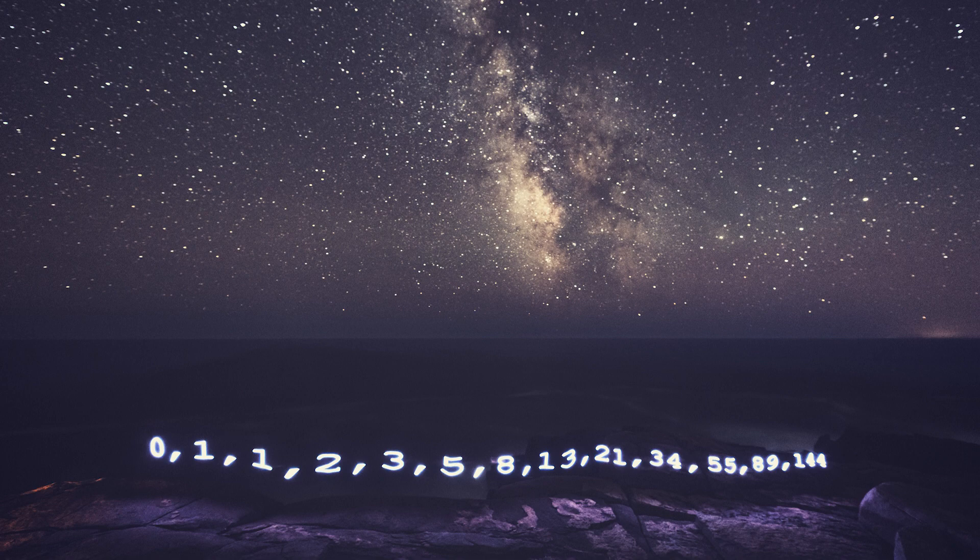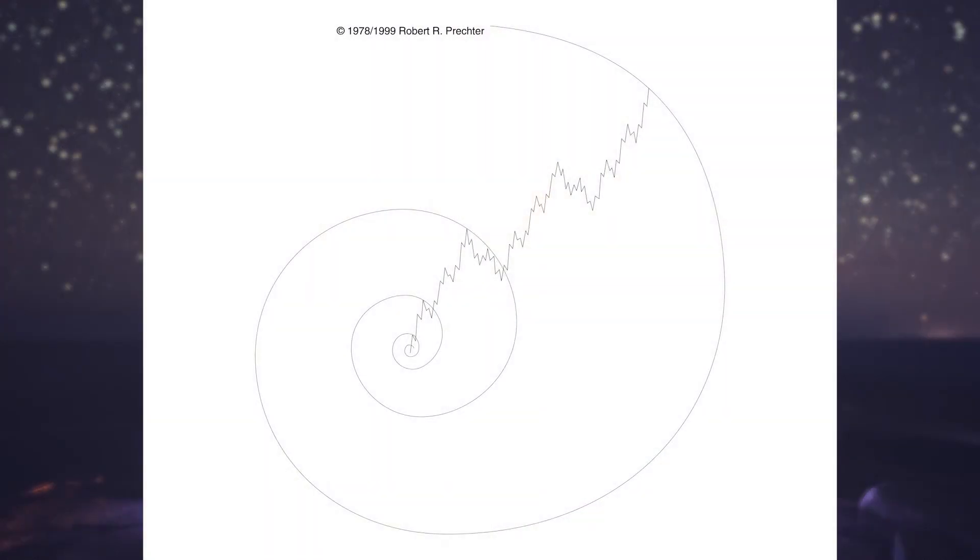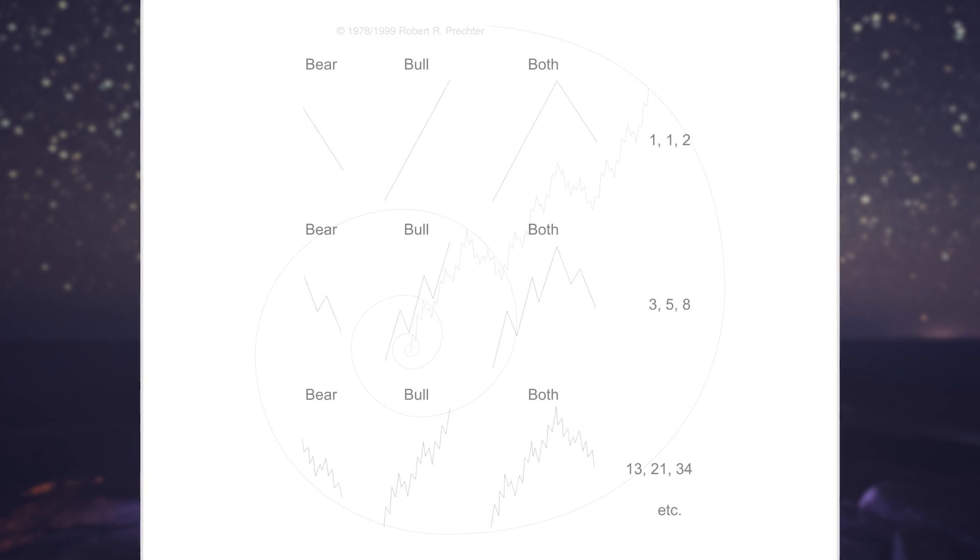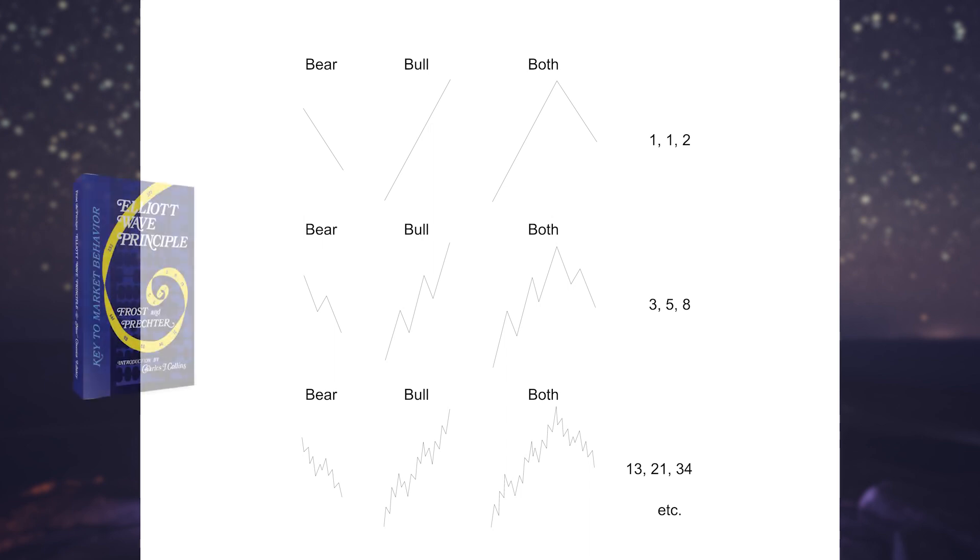The Fibonacci sequence also governs the number of waves that form in the movement of aggregate stock prices. Take a look at this figure from the Wall Street classic book, Elliott Wave Principle. The book notes, The essential structure of the market generates the complete Fibonacci sequence.